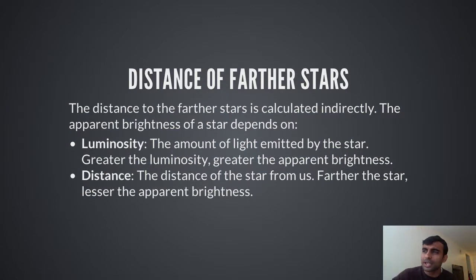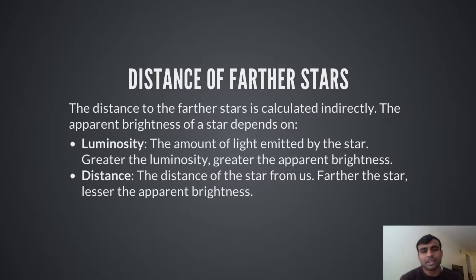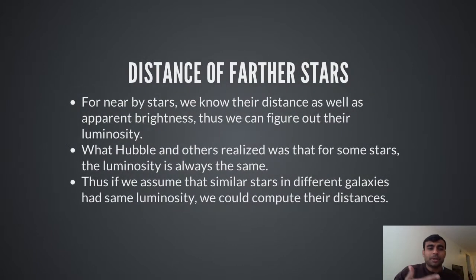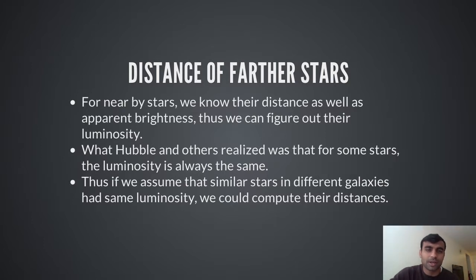The distance of farther stars is calculated indirectly using the apparent brightness of stars. When you look at the night sky, some stars are bright and some are not. Apparent brightness depends on two things: one is its luminosity — the amount of light it emits — and the second is its distance. The farther the star, the lesser the apparent brightness. In our own galaxy, we know a star's apparent brightness and its distance from parallax, so we can figure out its luminosity.